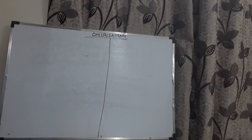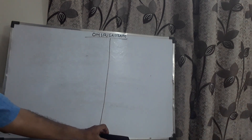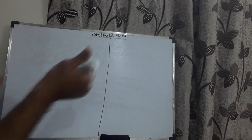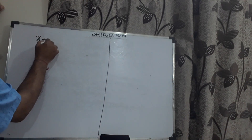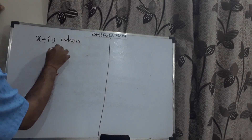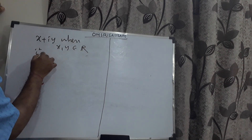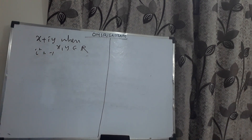Good morning, dear students. In this video presentation, we will give an introduction about complex numbers and do some problems if time permits. For competitive examinations, any number of the form x plus iy, where x and y are real numbers and i squared equals minus one, is known as a complex number.